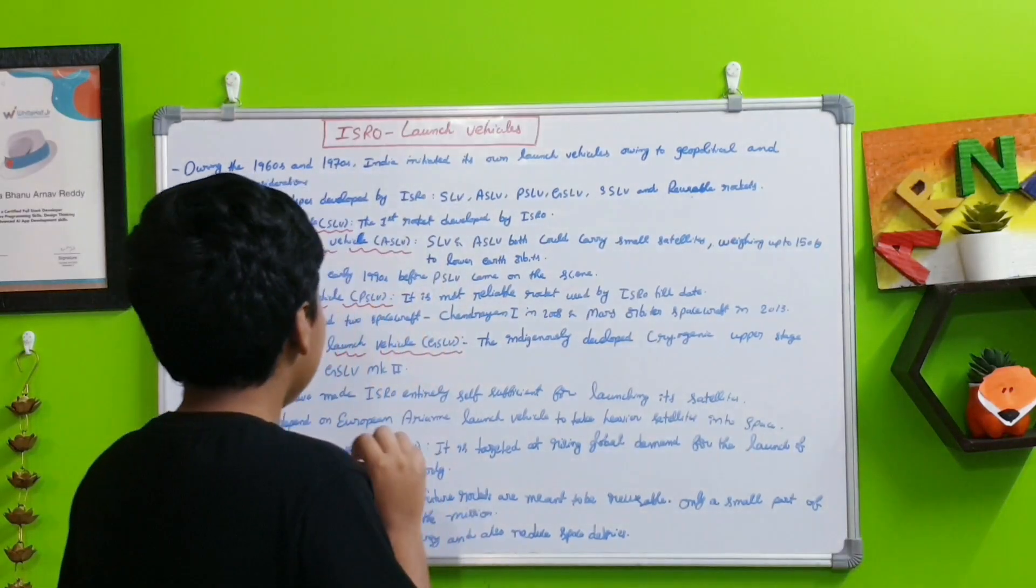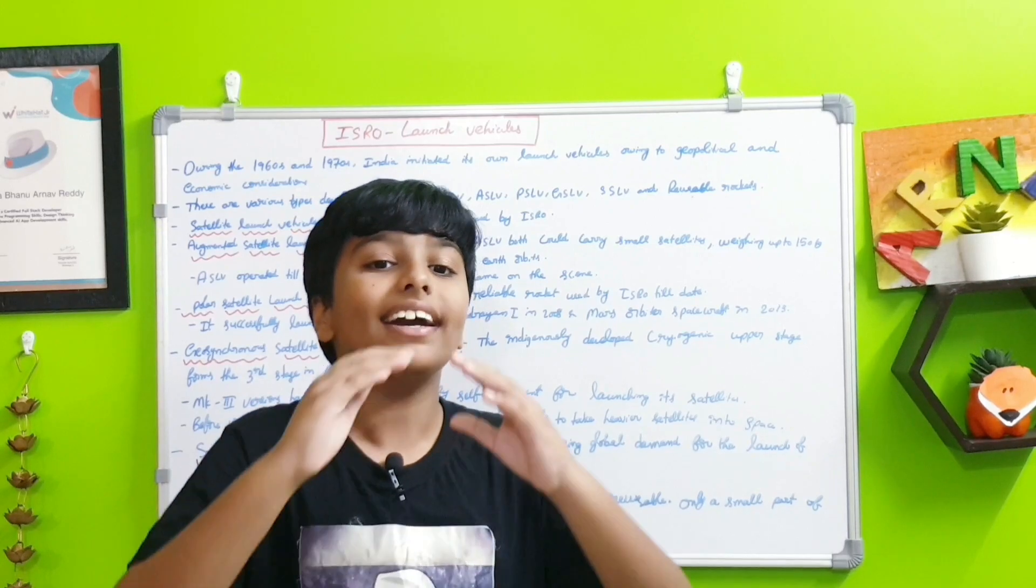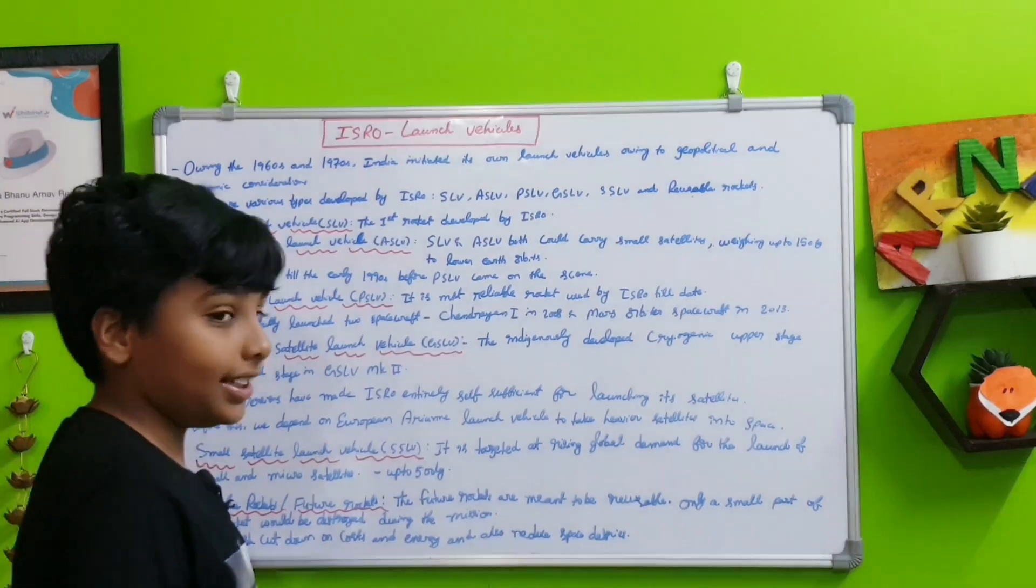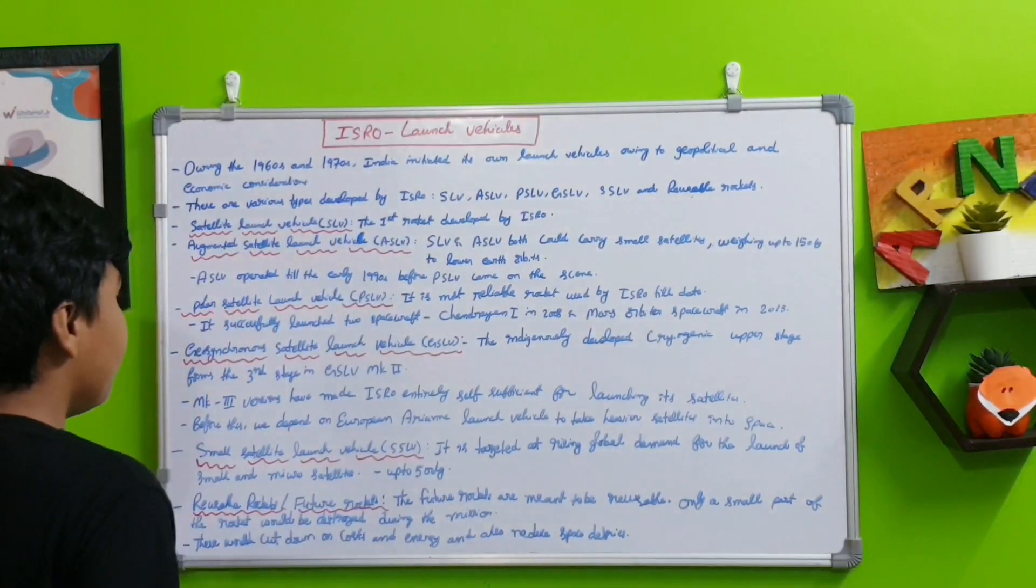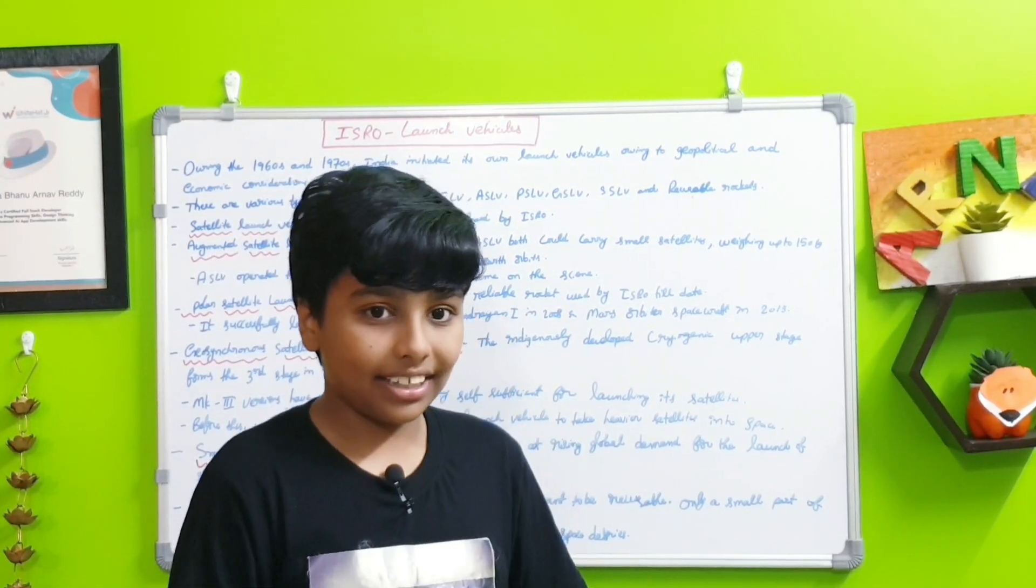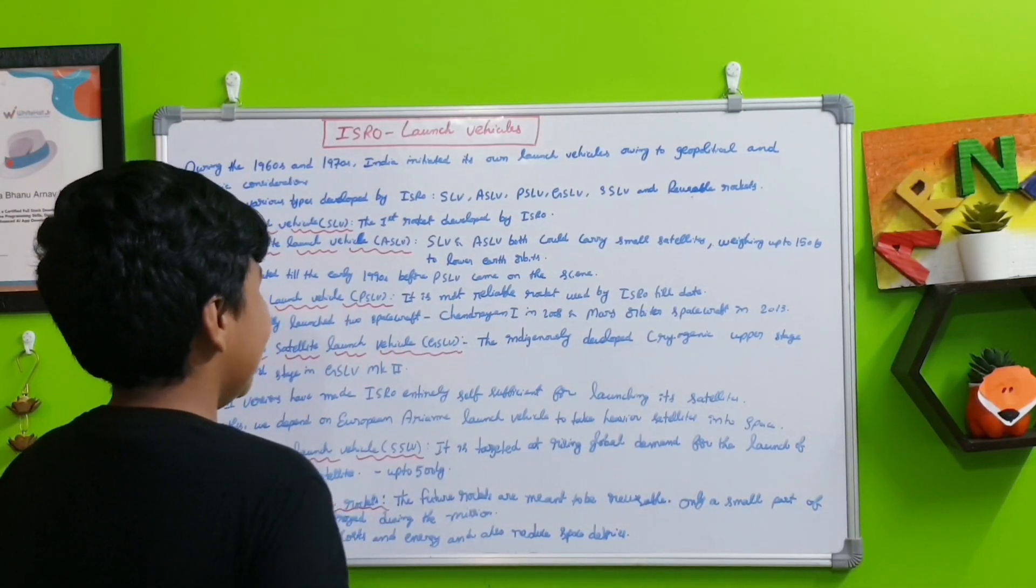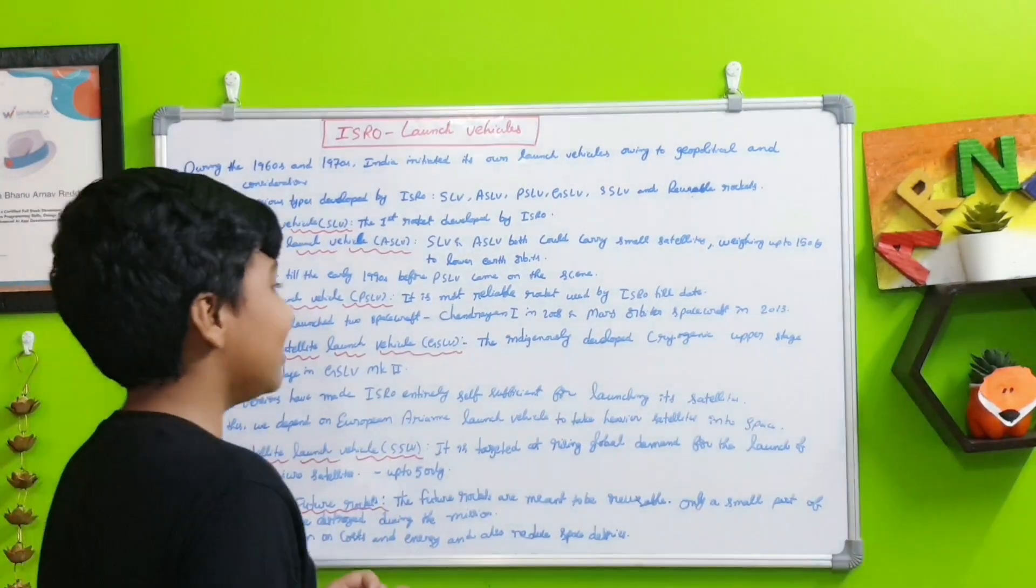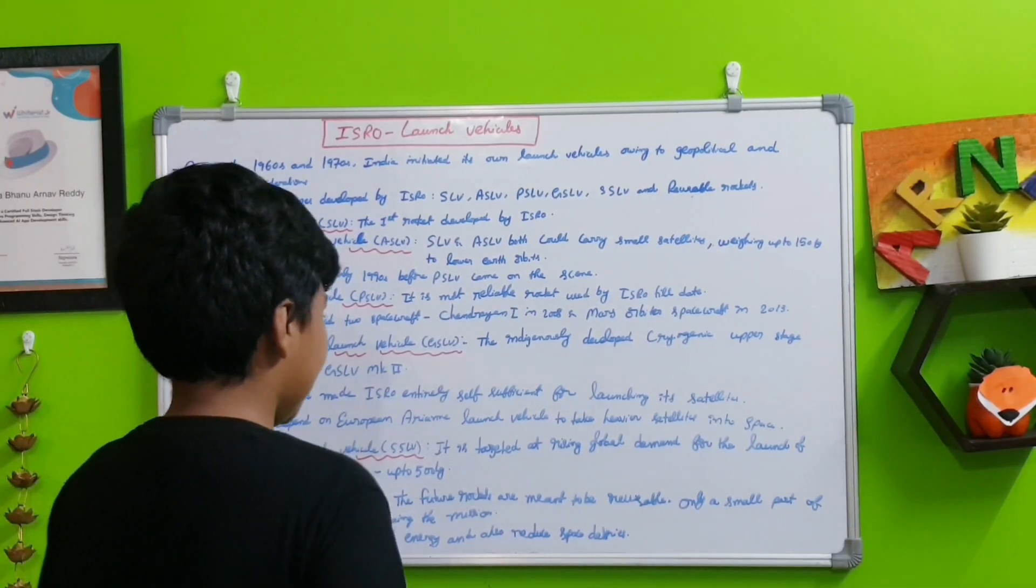This GSLV normally sends satellites into high earth orbit. That high earth orbit is known as Geosynchronous Transfer Orbit or GTO. This GSLV sends communication satellites up to that GTO orbit. This was indigenously developed—this indigenously developed cryogenic upper stage forms the third stage in the GSLV MK2.